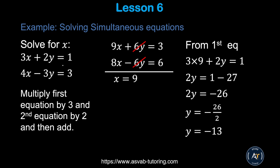For a harder simultaneous equations problem: 3x + 2y = 1 and 4x − 3y = 3. It's not straightforward, so multiply the first equation by 3 and the second by 2: 9x + 6y = 3 and 8x − 6y = 6. Add to eliminate y: 9x + 8x = 17x... actually 9x + 8x gives 17x — add the equations: 6y and −6y cancel, so x = 9.